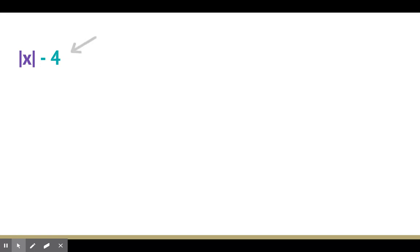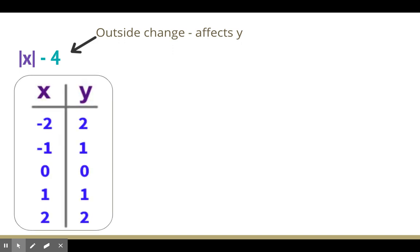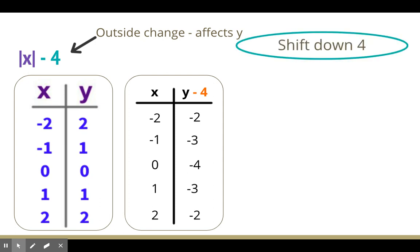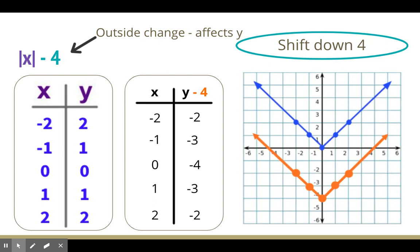If we take a look at another example, absolute value of x minus 4 — it's on the outside, so once again it changes and affects the y value. We have our parent table for absolute value; nothing happens to the inside, so they stay the same. On the outside, we subtract 4 from the y's: 2−4=−2, 1−4=−3, 0−4=−4, 1−4=−3, 2−4=−2. This is a shift down 4. Here are the new points on the graph — I've taken that blue original parent graph and moved it down 4 units.